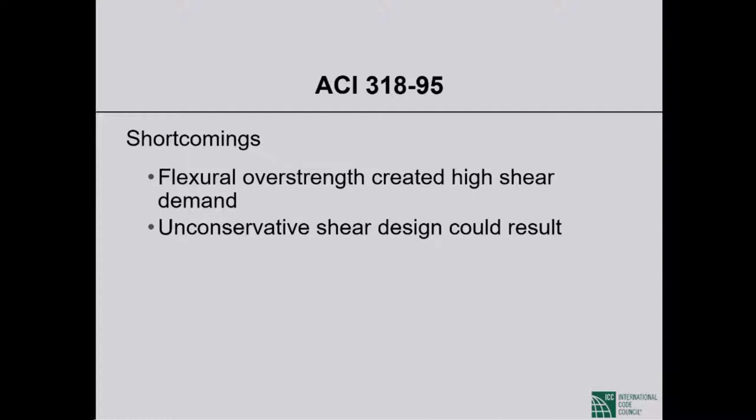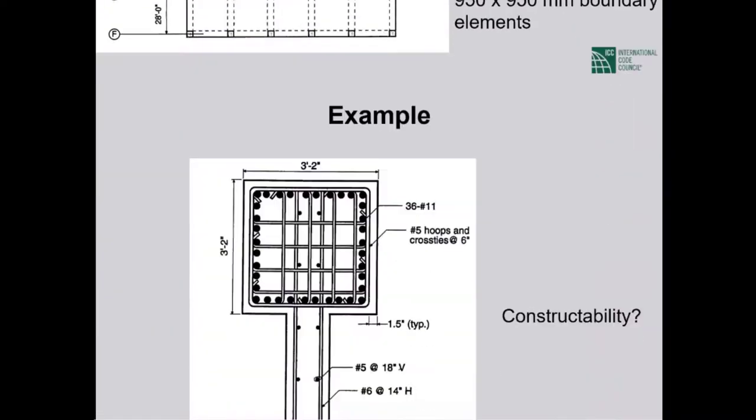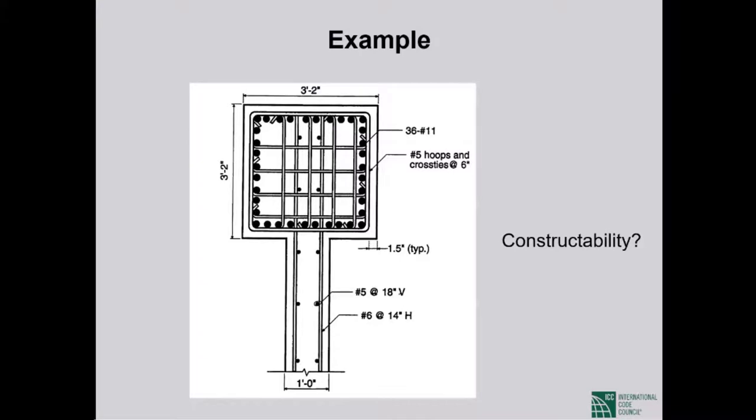The shear walls designed under the old approach had enormous flexural strength, which would draw incredible amounts of shear in an actual earthquake. Since shear strength was not correspondingly increased, brittle shear failure was more than likely. What looked like a very conservative approach was not even safe — it was actually unconservative.